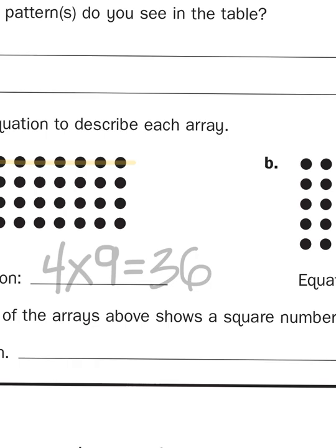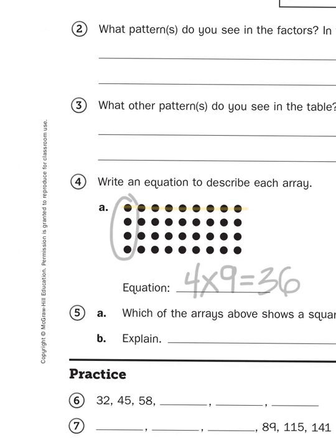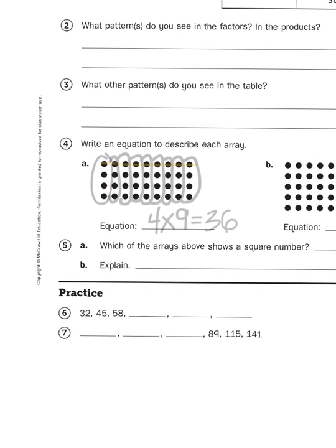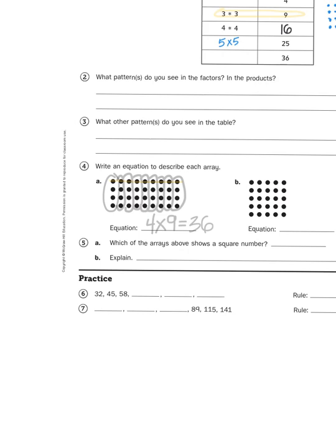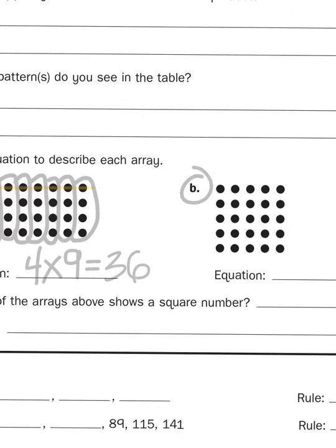Now, I could count all the dots singularly, or I could just skip count by 4s because there's 4 in each column. So skip count with me. 4, 8, 12, 16, 20, 24, 28, 32, 36. There you go. Continue by creating an equation or multiplication problem that explains what we're looking at for B.